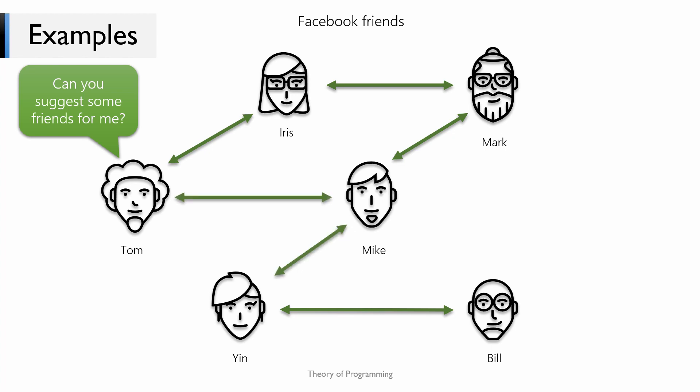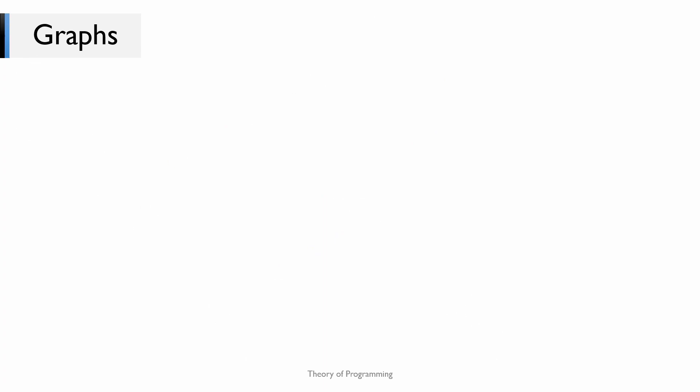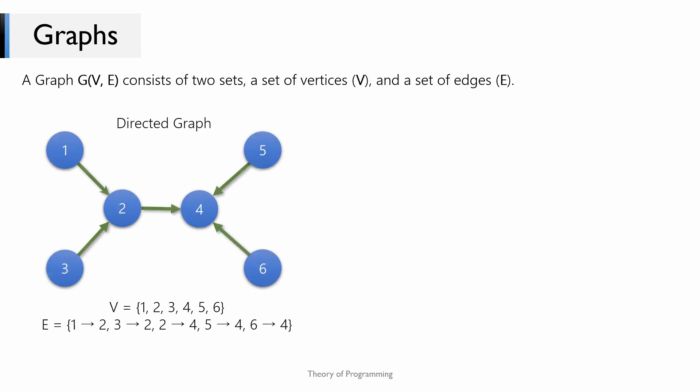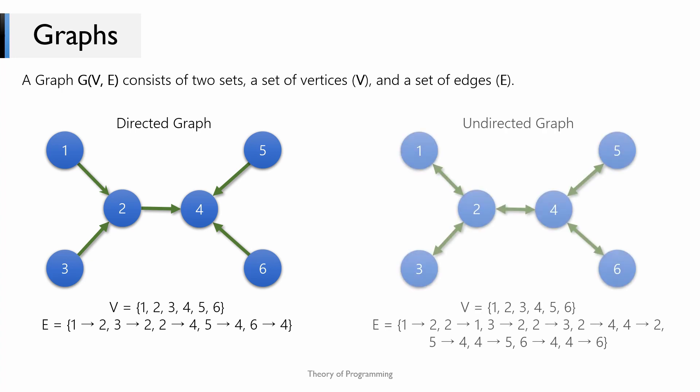Coming to the mathematical definition of a graph: a graph is denoted as G(V, E) where V is the set of vertices and E is the set of edges. This is a directed graph. For this graph the set of vertices V would be {1, 2, 3, 4, 5, 6} and the set of edges E would be a set of edges like (1,2), (2,3), (2,2), etc.